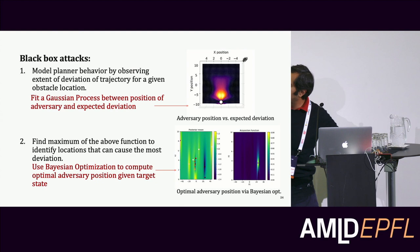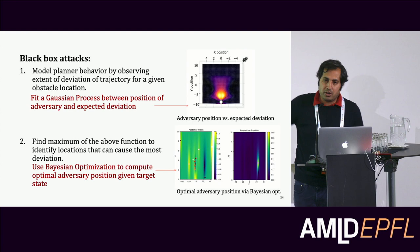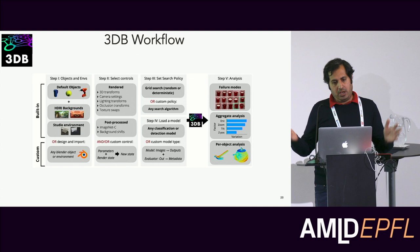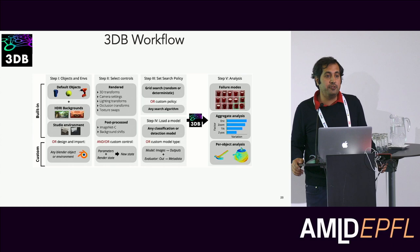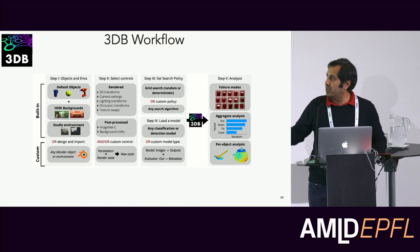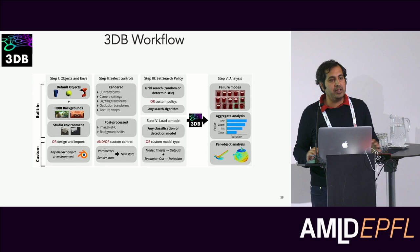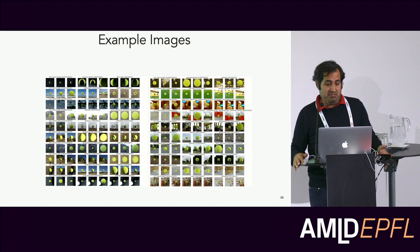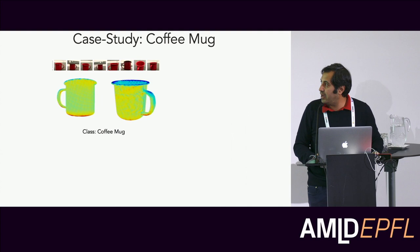In computer vision, everyone is building big models and asking how to find where they fail. We use differentiable rendering — specifically Mitsuba from EPFL — to render objects in many different configurations: different sizes, camera angles, lightings, textures, and backgrounds. Then you can query where the problem lies.